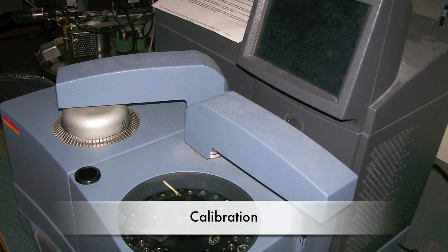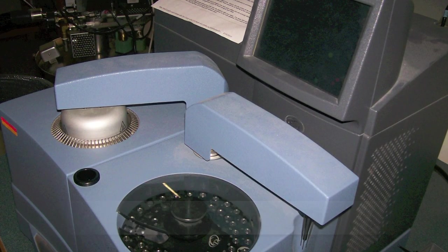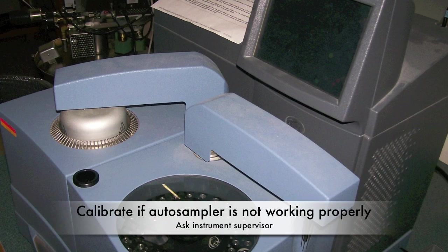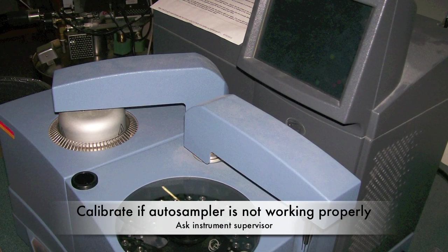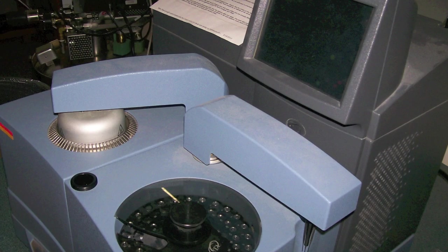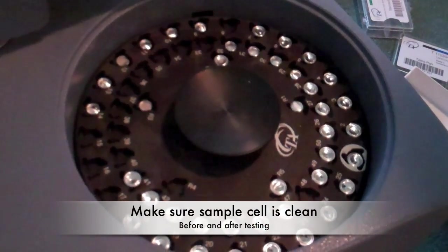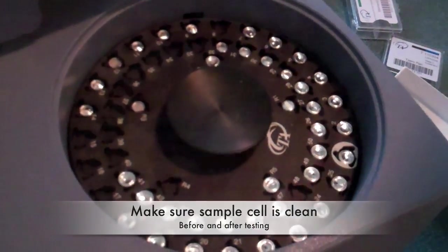The arm of the auto-sampler is calibrated to ensure accurate placement of samples inside the DSC sample cell. If the auto-sampler does not perform this function, like from accidentally bumping it, consult a group member for assistance with the auto-sampler calibration. Make sure the sample cell is clean before and after your test.